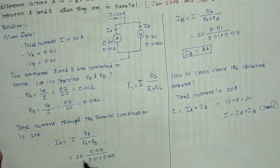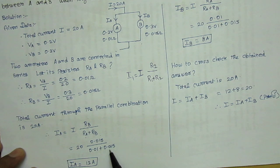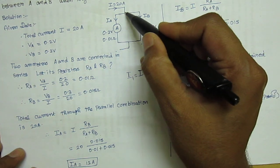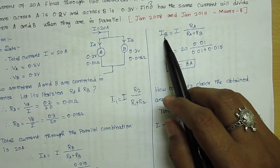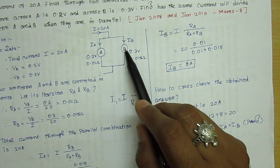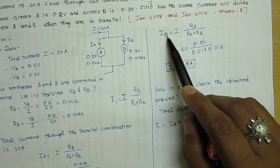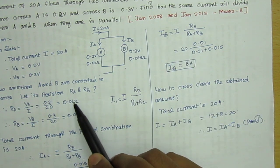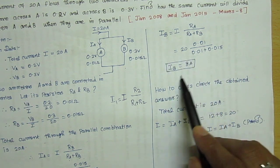Substituting the values: I_A = 20 × 0.015 / (0.01 + 0.015), which gives I_A = 12 amps. Now for ammeter B, using the current divider rule: I_B = I × R_A / (R_A + R_B) = 20 × 0.01 / (0.01 + 0.015), giving I_B = 8 amps.